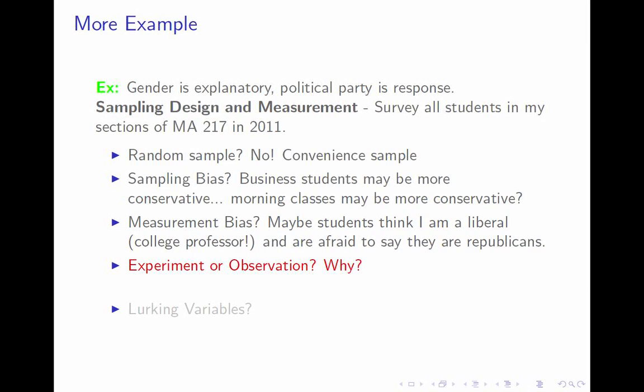I won't lower your grade. Is this an experiment or an observational study, and why? It's an observational study. The reason is because we did not assign genders — I don't know how you could randomly assign half the people a gender. It doesn't matter what you're doing to affect or control people; it only matters whether you assigned values of the explanatory variable.